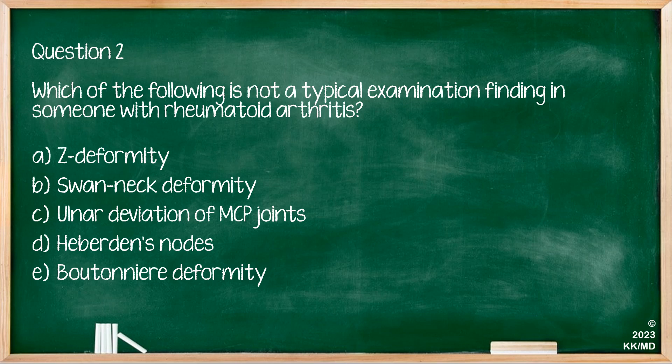Question two: which of the following is not a typical examination finding in someone with rheumatoid arthritis? The options are Z-deformity, swan neck deformity, ulnar deviation of the MCP joints, Heberden's nodes, or Boutonniere deformity. The correct answer is Heberden's nodes, which is a feature of osteoarthritis, along with Bouchard's nodes. It is worth remembering that you can have co-existing osteoarthritis and rheumatoid arthritis in the same patient — worth keeping in mind when examining someone, for example, in PACES.